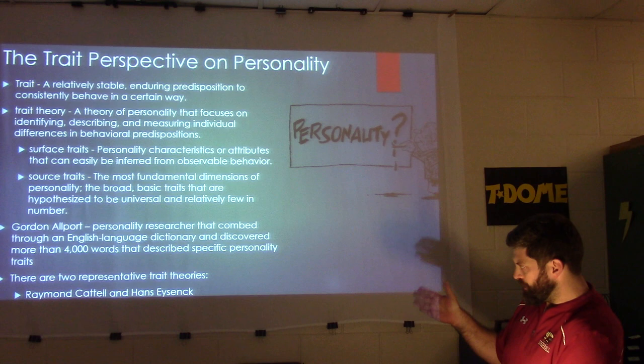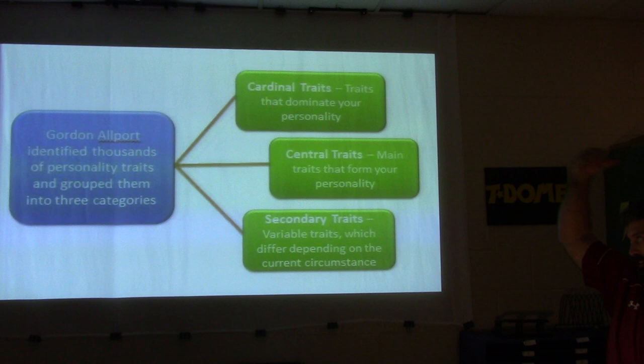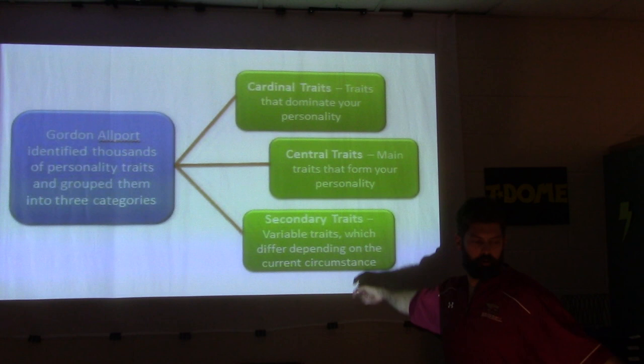There are two representative trait theories — one by Raymond Cattell and the other by Hans Eysenck. Allport identified thousands of personality traits, categorized as cardinal traits, central traits, and secondary traits. Cardinal traits dominate your personality — the pillars of your personality. Central traits are the main traits that form your personality, and secondary traits may change according to circumstance.